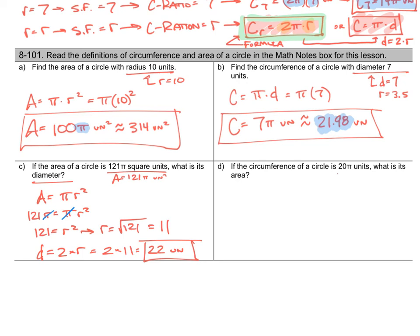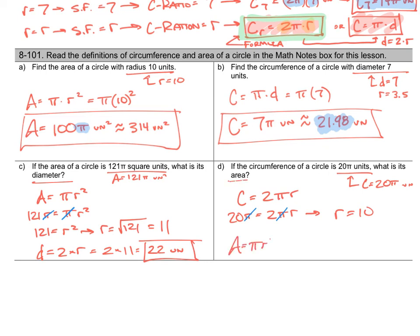Part D: if the circumference of a circle is 20 pi units, what is its area? Circumference equals 2 pi r, so 2 pi r equals 20 pi. The pi's cancel, leaving 20 equals 2 times r, so r equals 10. Area equals pi times radius squared — pi times 10 squared — 10 squared is 100, giving 100 pi square units, or approximately 314 square units. Let's shut it down on this page and pick up page 2 in just a moment.